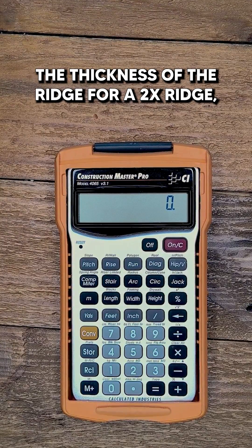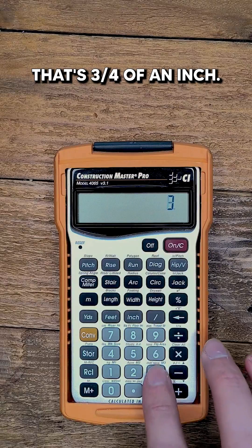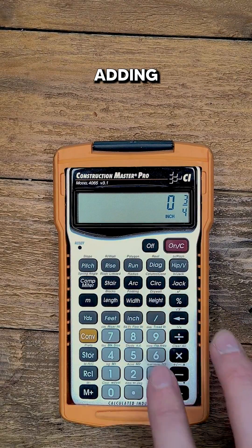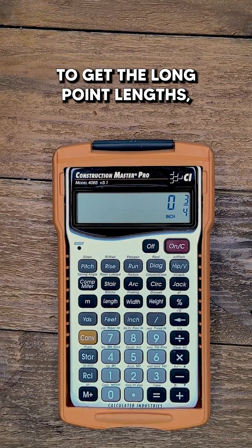If you deduct half the thickness of the ridge for a 2x ridge, that's 3 quarters of an inch. Adding 7 sixteenths is intended to get the long point lengths,